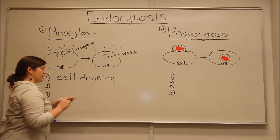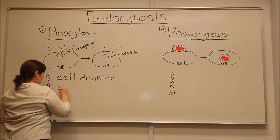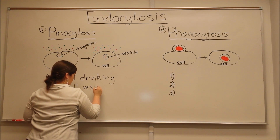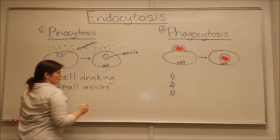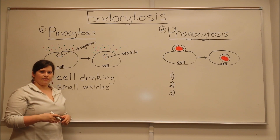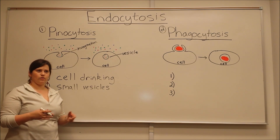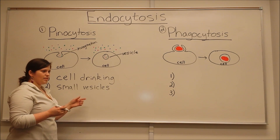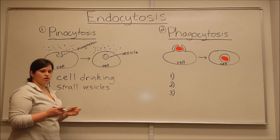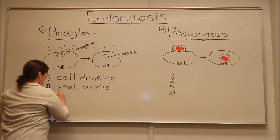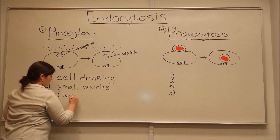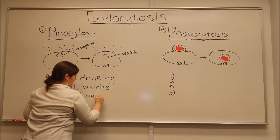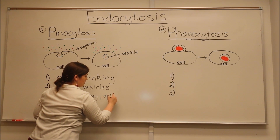These vesicles with pinocytosis are relatively small. This is one way that cells get the nutrients that they need or take up signaling components. The most common cells that are using pinocytosis are liver cells, kidney cells, and epithelial cells — so skin cells.